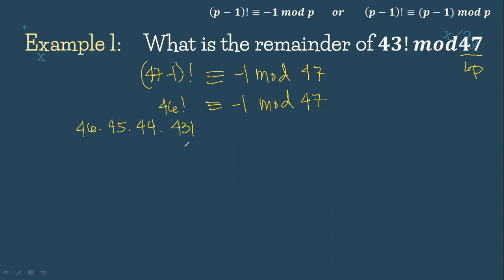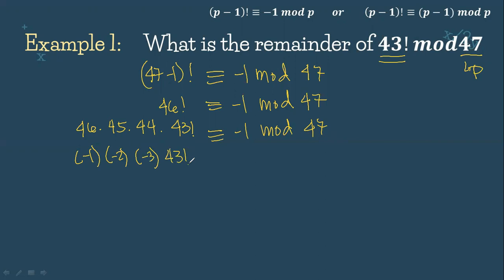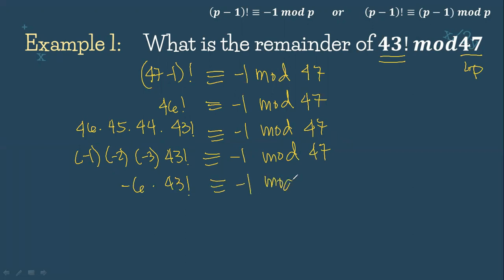We stop at 43 factorial because that is what we're looking for. So that gives us negative 1 mod 47. Now, 46 minus 47 is negative 1; 45 minus 47 is negative 2; 44 minus 47 is negative 3; and 43 factorial is congruent to 1 mod 47. So negative 1 times negative 2 is 2; 2 times negative 3 is negative 6 times 43 factorial, congruent to 1 mod 47.